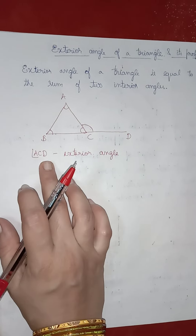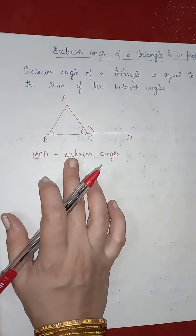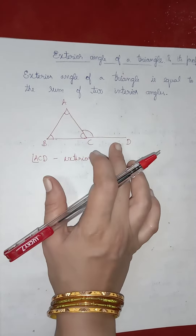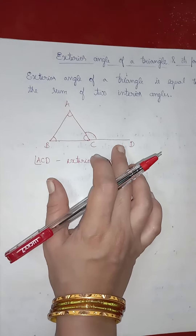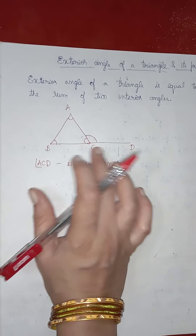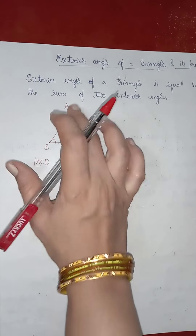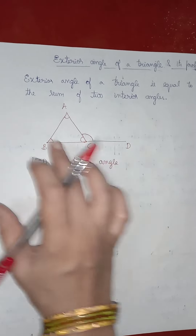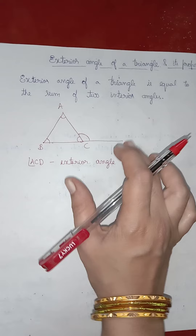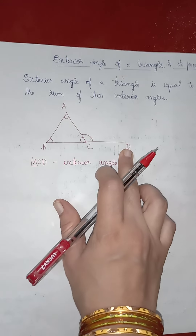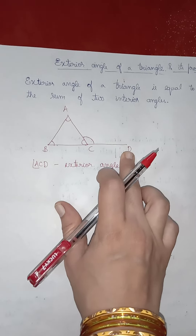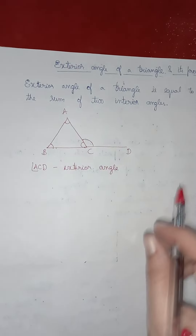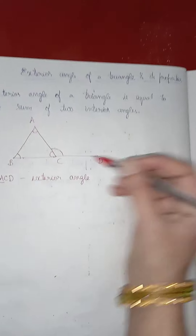So, angle ACD is the exterior angle in this figure. You can extend any of the three sides to obtain an exterior angle.